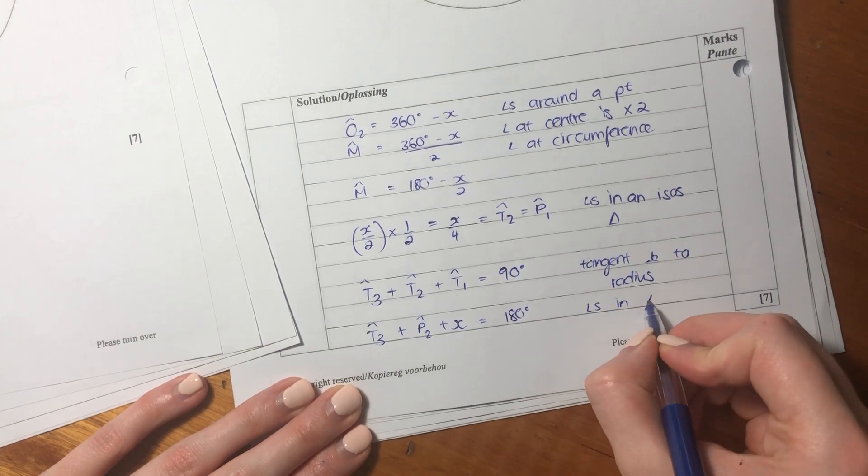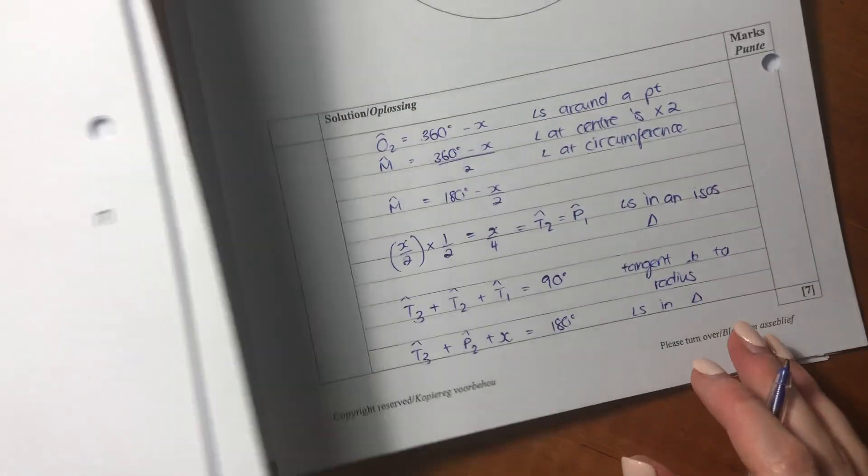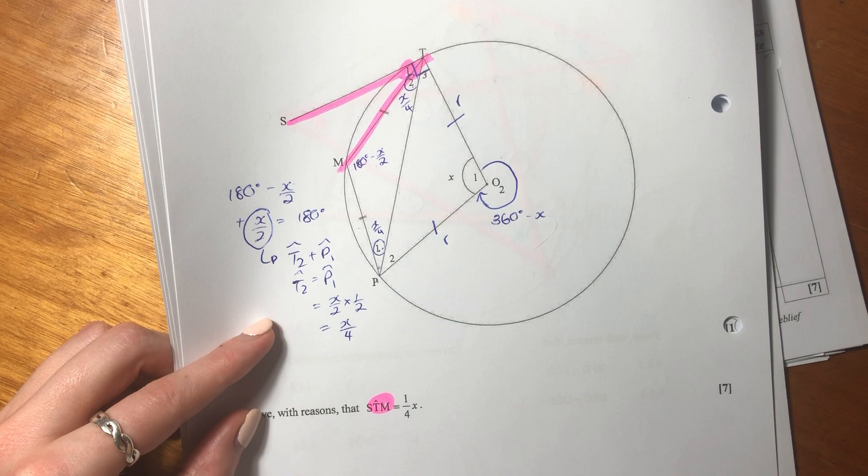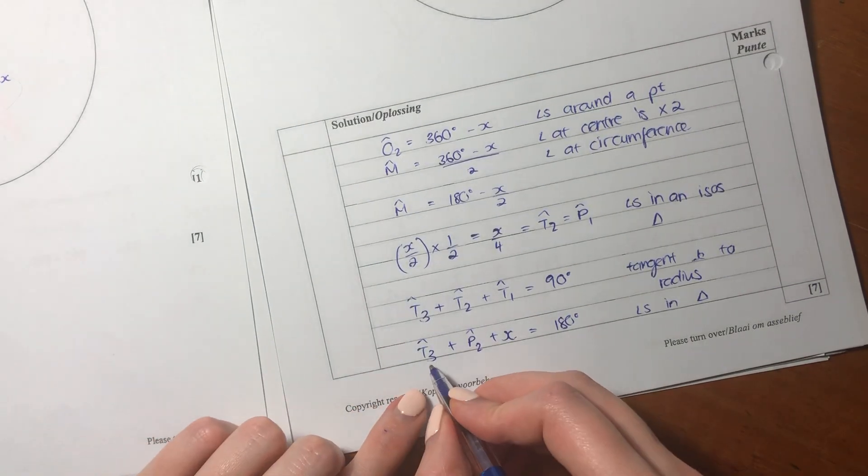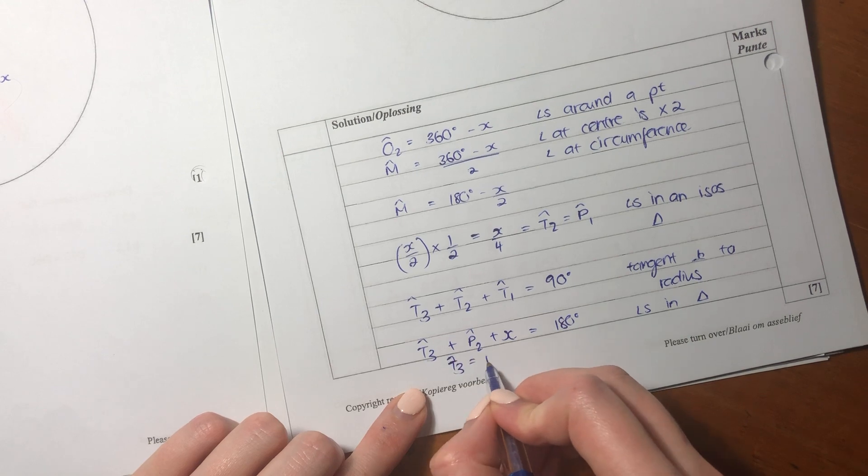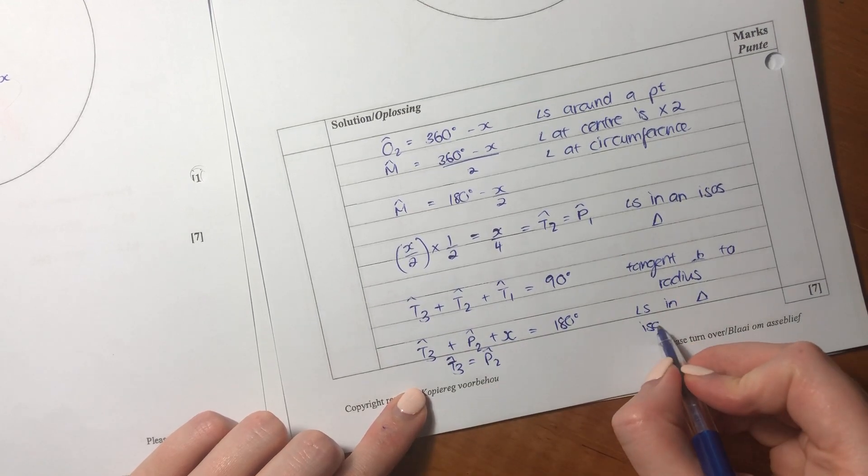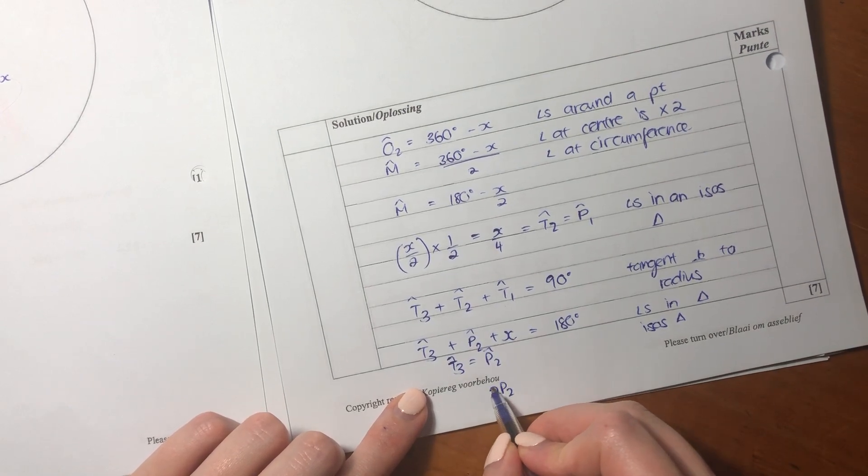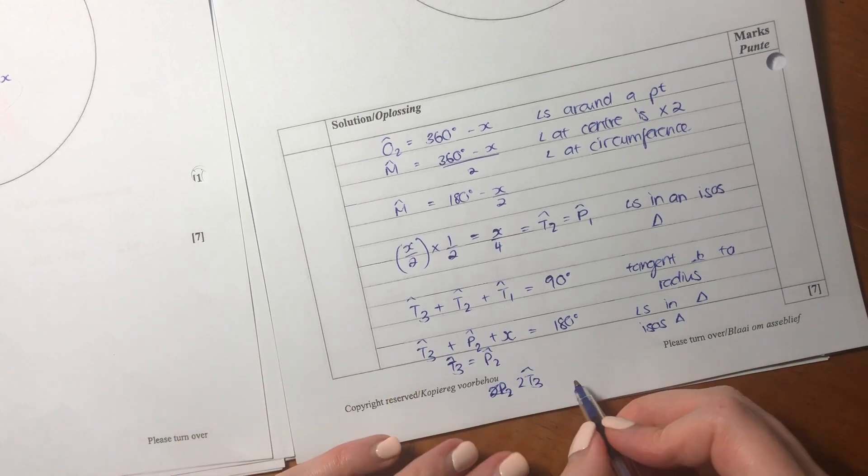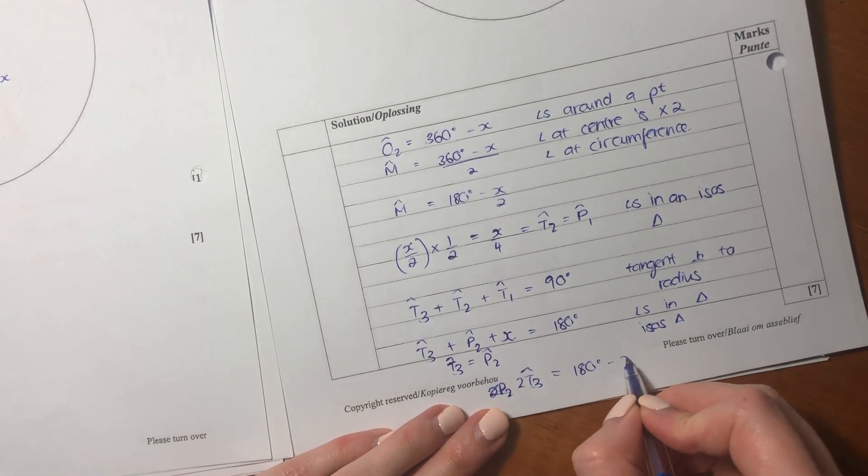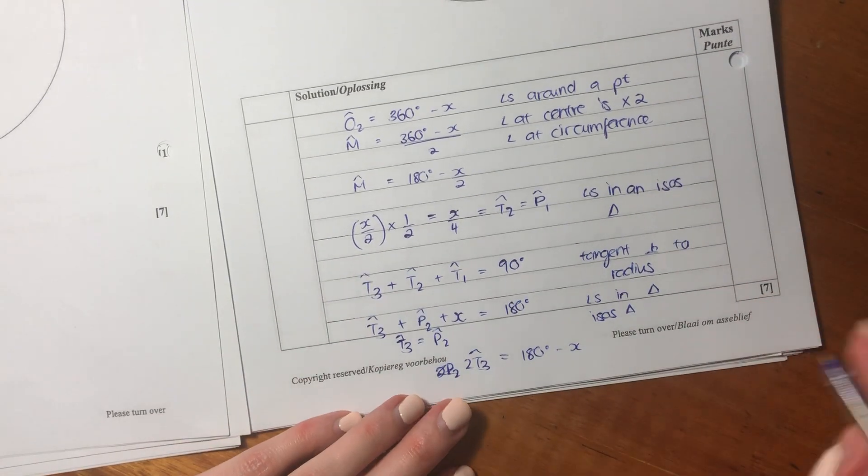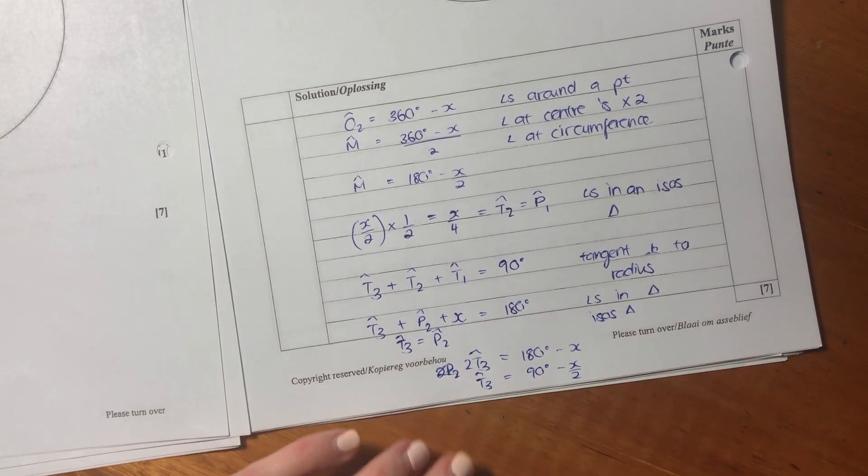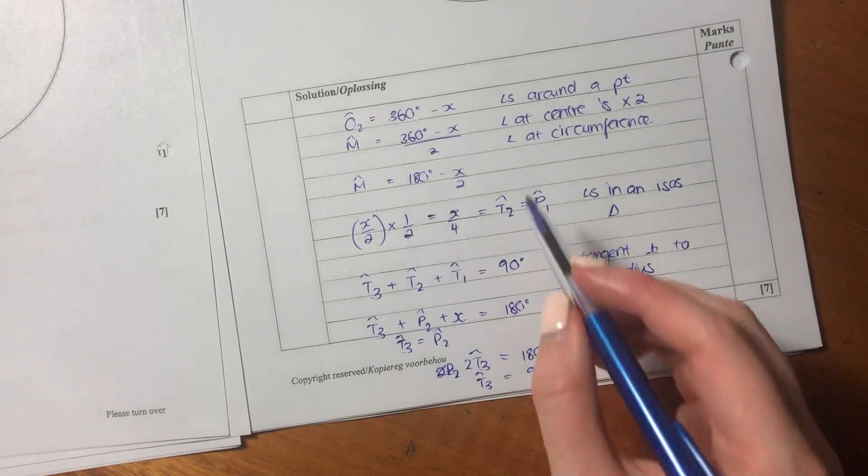Because of angles in a triangle. We know that because X plus T3 plus P2 should equal 180. Angles in a triangle. But we know that T3 equals P2 because of isosceles triangle. So we actually have 2T3 equals 180 minus X. So then T3 equals 90 minus X over 2.